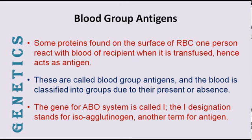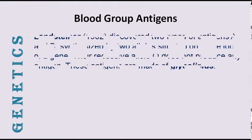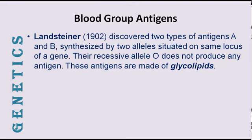The blood is classified on the basis of these antigens present in the blood. The most common one is the ABO system, and the gene causing formation of antigen A and antigen B is named as I-gene. I-gene is designated for isoagglutinogen, which is another term for antigen. Landsteiner in 1902 discovered these two antigens, A and B. They are synthesized by two alleles of the same gene I. But there is a third allele O that does not synthesize any of the two antigens. So there are three alleles of gene I, and these alleles are made of glycolipids.